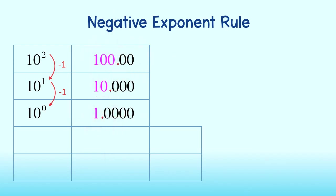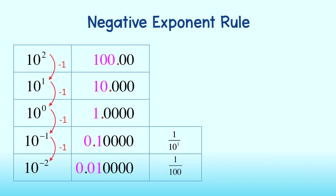So, if we decrease our power of 10 once more, the decimal place will move another spot to the left. This number is 1 tenth, or 1 over 10 to the first power. Decrease the power and move our decimal to the left once again gives us 1 hundredth, or 1 over 10 to the second power.